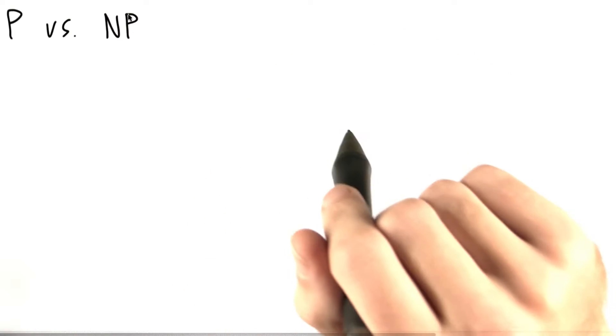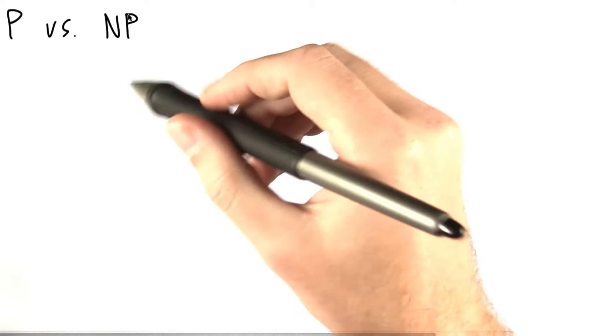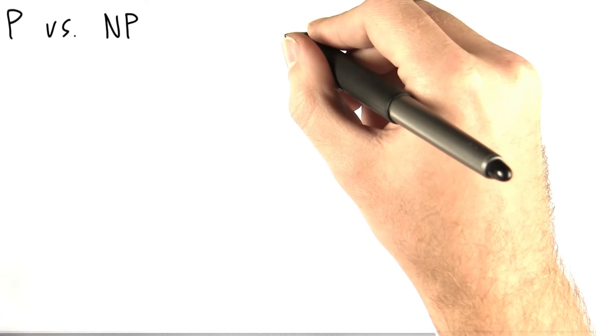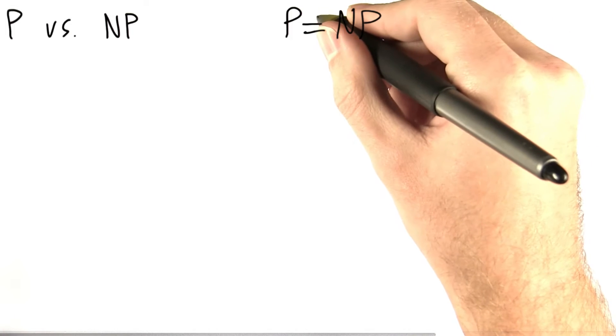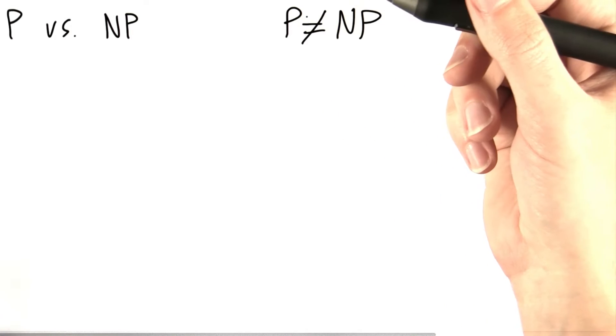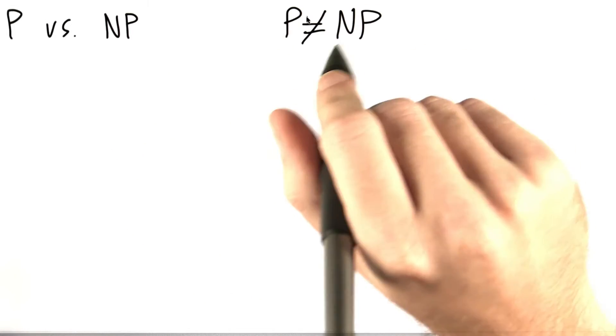For the final problem in this homework, we're going to be talking about some distinctions between P and NP and also what it would mean if P were equal to NP or if instead P were not equal to NP. Let's look at a few examples.